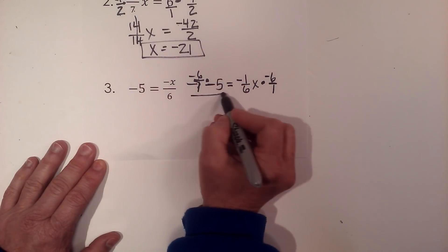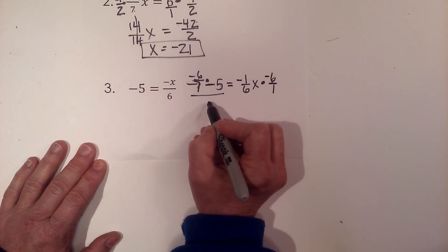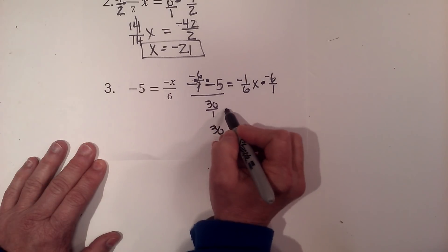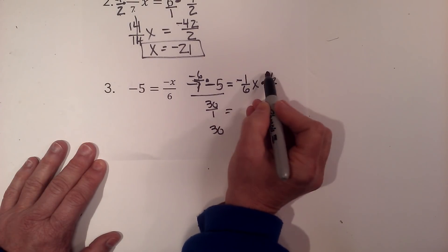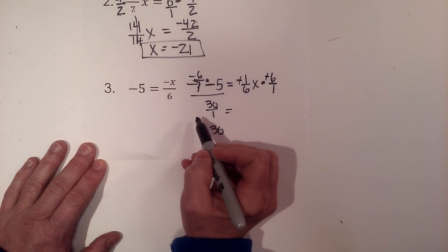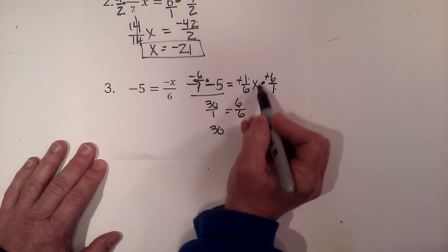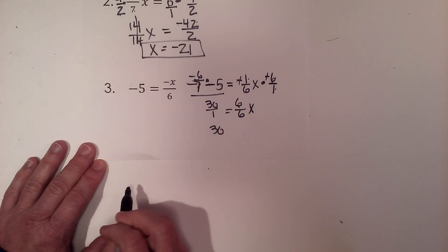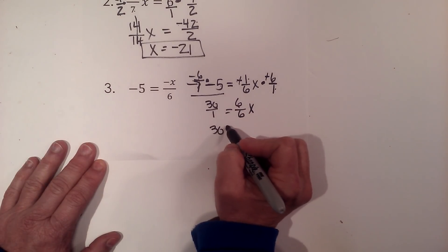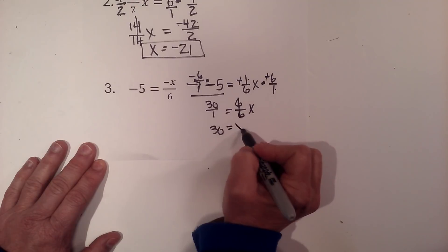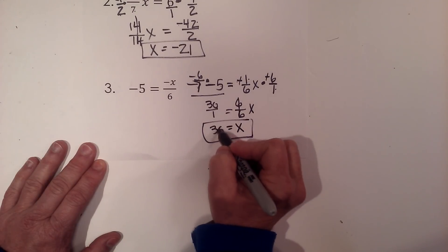When I clean this left side up, negative six times negative five is thirty over one, or just thirty. On the right side, negative times a negative is a positive. Multiply the top together, six. Multiply the bottom together, six. And I still have my x I'm bringing down. Six over six, anything over itself is one. So I just get x equals thirty.